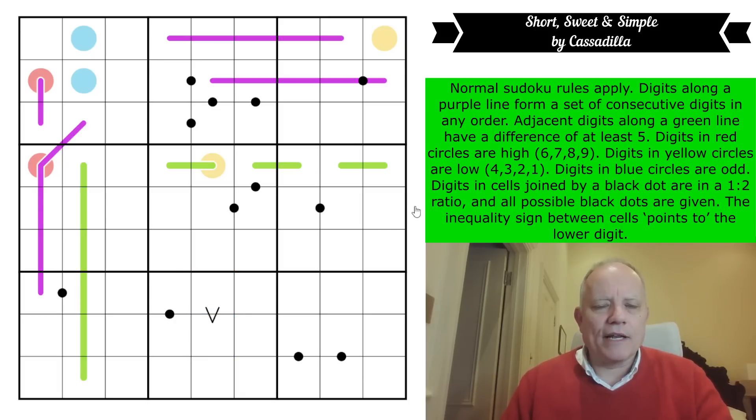So those are the rules here. Now let's not forget the negative constraint on the black dots, because I imagine that will matter.